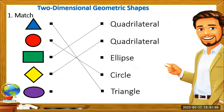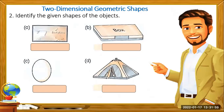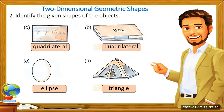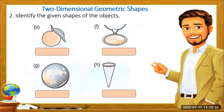Now let's identify the shapes of the following objects. Letter A: the shape is a quadrilateral. Letter B: a box — quadrilateral. Letter C: an egg — ellipse. Letter D: a tent — the face is a triangle. Letter E: an orange fruit — circle. Letter F: an amulet — ellipse. Letter G: the moon — circle. Letter H: the cone of an ice cream — triangle.